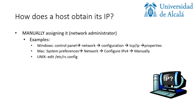One option is to manually assign it. Each operating system has its own method for this, and we're showing some examples in the slides. However, this is not usual, particularly if the user is not familiar with networking aspects and related technical concepts. In this regard, DHCP automatically assigns IPs in a transparent way to users.